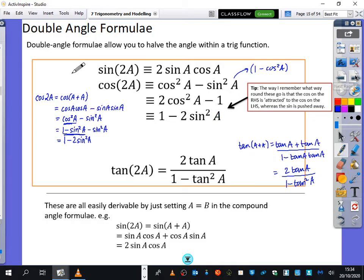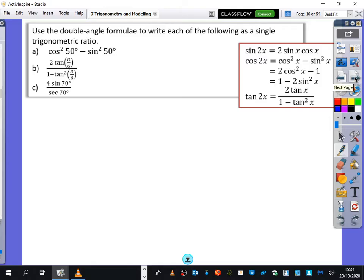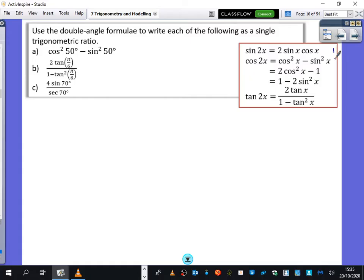Okay, we're going to start applying these now. So here we want to use the double angle formulae to write each of the following as a single trigonometric ratio. So I'm going to label these 1, 2, 3, 4 and 5.